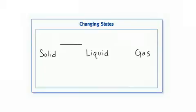Finally, draw an arrow with the marker on the chart from solid to liquid, and write melting above the arrow. Add plus heat above the word liquid to indicate that heat must be added to a solid to change its state to a liquid.